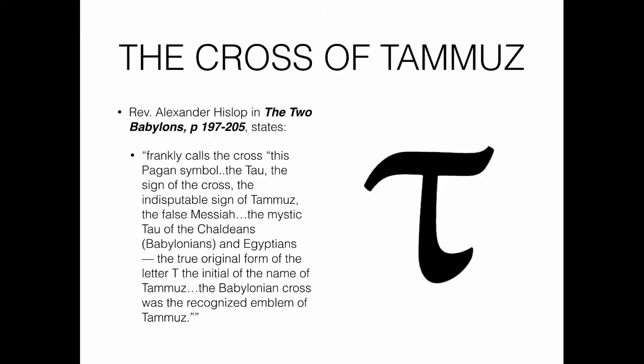Reverend Alexander Hislop in The Two Babylons, pages 197 to 205, frankly calls the cross this pagan symbol — the tau — the indisputable sign of Tammuz the false messiah, the mystic tau of the Chaldeans and Babylonians and Egyptians, the true original form of the letter T, the initial of the name of Tammuz. The Babylonian cross was the recognized emblem of Tammuz.